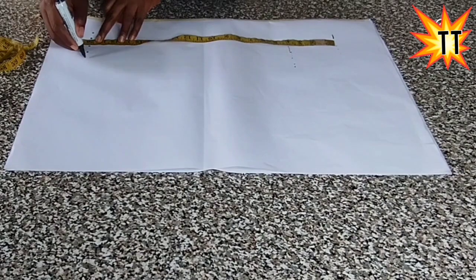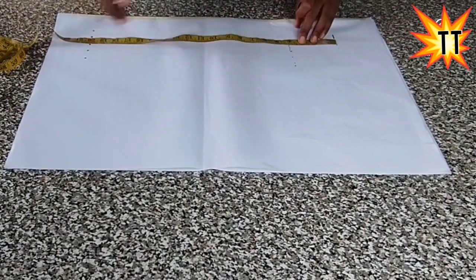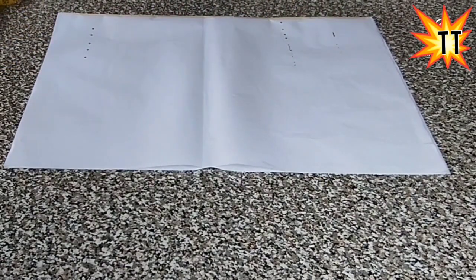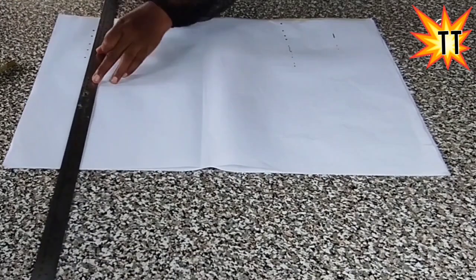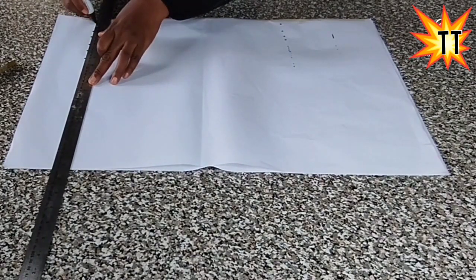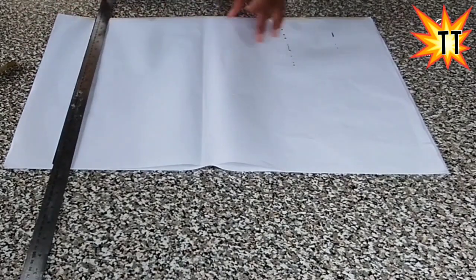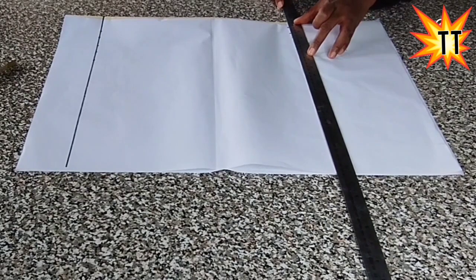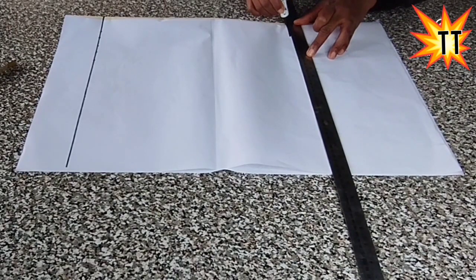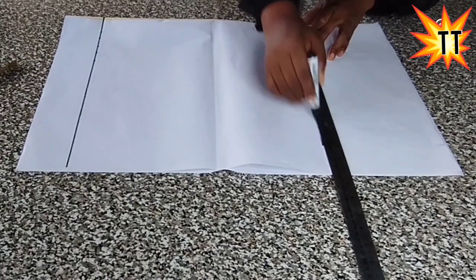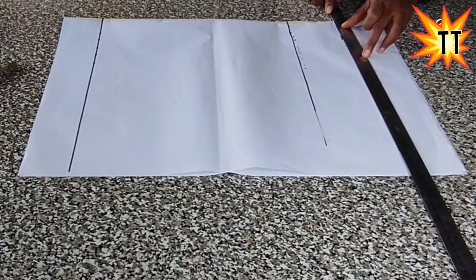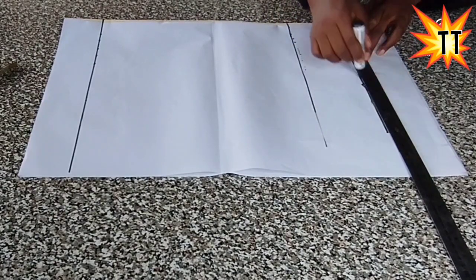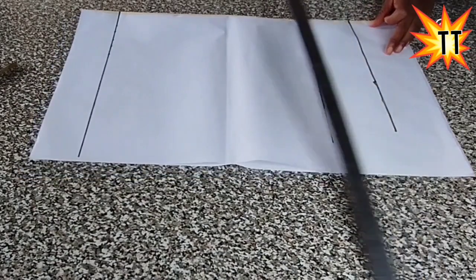So I'll have to join all these dots now. I'll make a line for you to see, invisible line. Okay, this is the shirt sleeve length and this is the shirt sleeve line and this is a puff allowance line. Okay, this is puff allowance line.